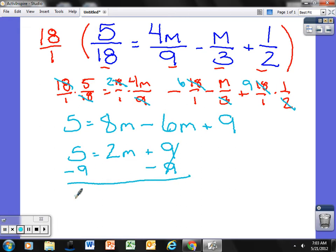I'm left with negative 4 is equal to 2m. I don't want to know what 2m is equal to. I want to know what 1m is equal to. So I'm going to divide both sides by 2 because that's the opposite of multiplication is division. To get rid of that 2 I need to do the opposite. So I divide this side by 2. I am left with m equals, well that becomes negative 4 divided by 2. That gives me negative 2.